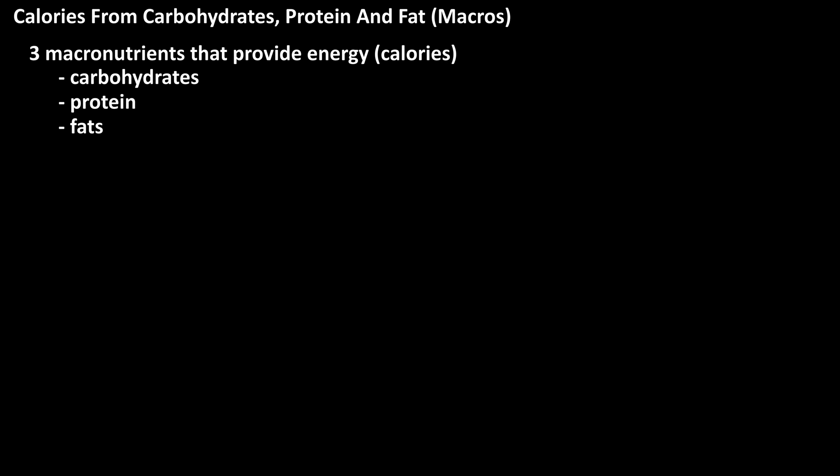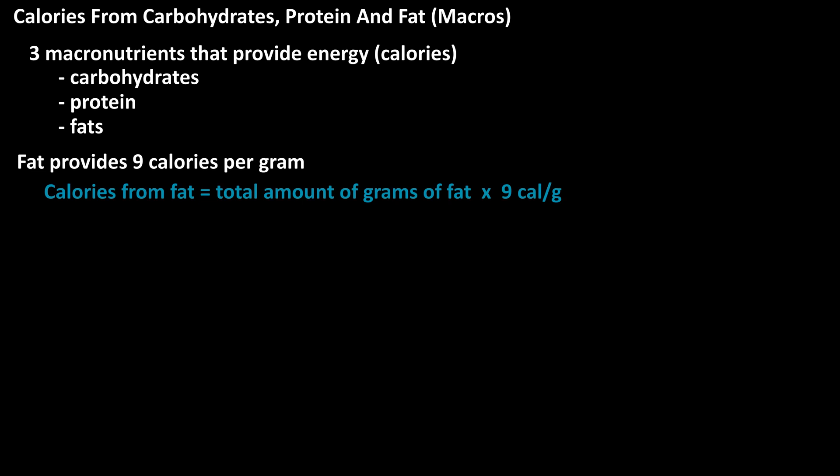Let's start with fats. Fats provide nine calories per gram. So to calculate the number of calories from fat for a particular food item, it would be: calories from fat equals the total amount of grams of fat times nine.